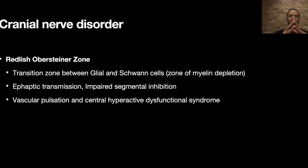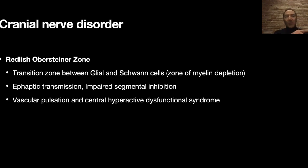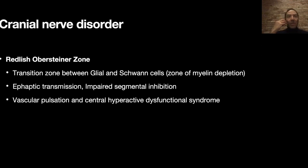Essential trigeminal neuralgia means it's not caused by another cause — there is no tumor, there is no aneurysm, there is nothing else causing trigeminal neuralgia. There is no tooth problem or a more distal problem in the branches of the trigeminal nerve causing it, because those would be symptomatic trigeminal neuralgia by another cause.